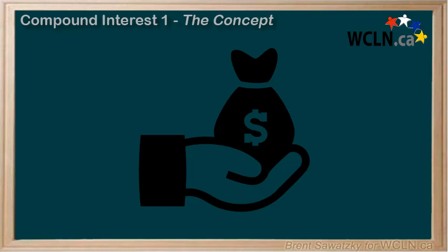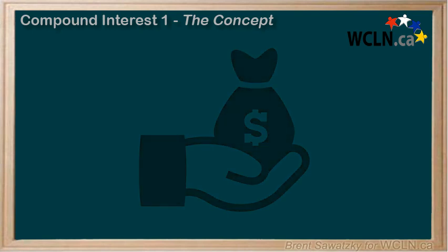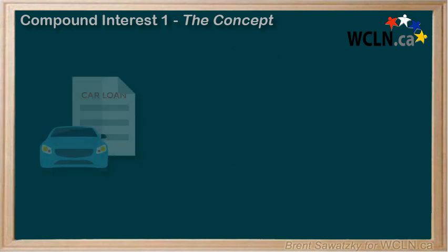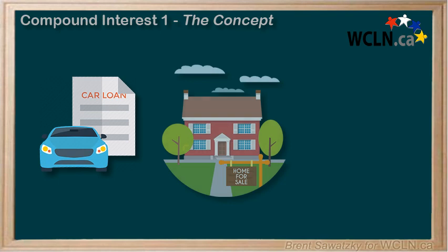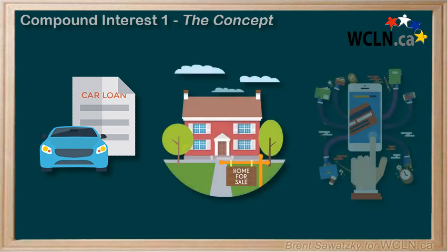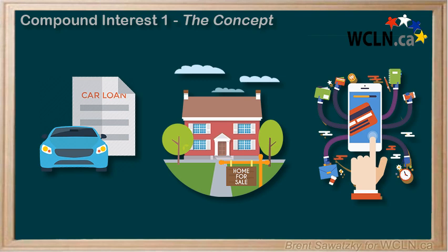Money is being borrowed every day. At some point, you'll very likely be a borrower of money — a car loan or a mortgage — and if you put money into the bank, then you'll also be a lender of money. The most common way to borrow or lend money involves compound interest.